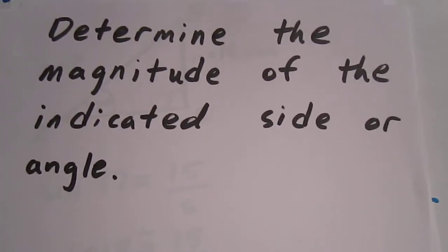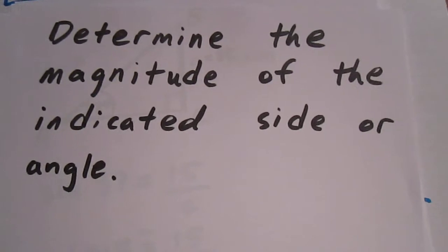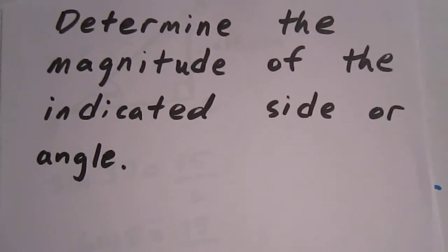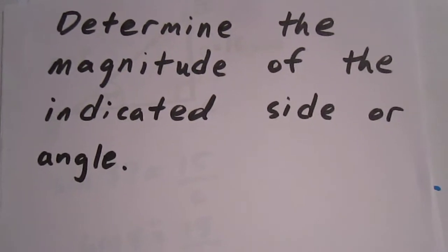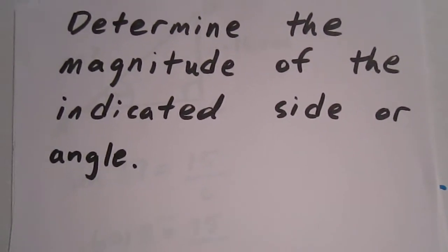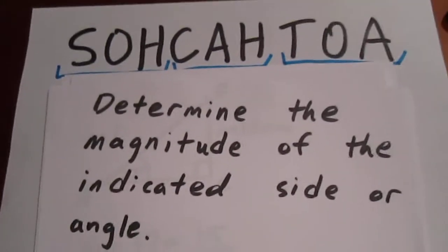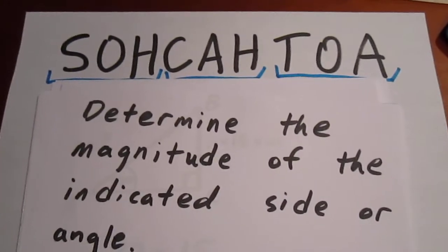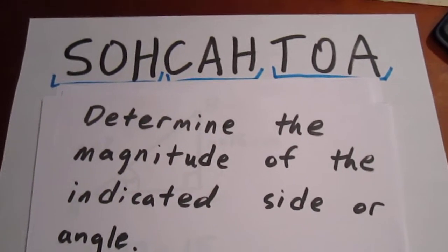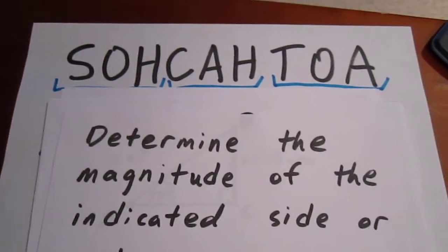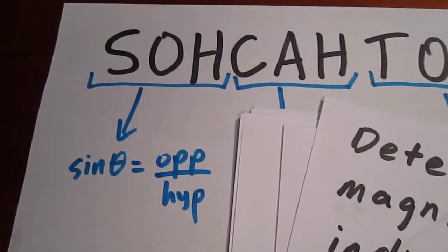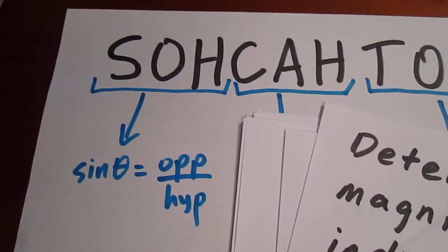We're going to do a few questions where we determine the magnitude of the indicated side or angle. These questions will all involve triangles that have a 90 degree angle. As such, they will all involve the word SOHCAHTOA. SOHCAHTOA is an acronym. It tells us that the sine of an angle is equal to opposite over hypotenuse. That's what SOH stands for.